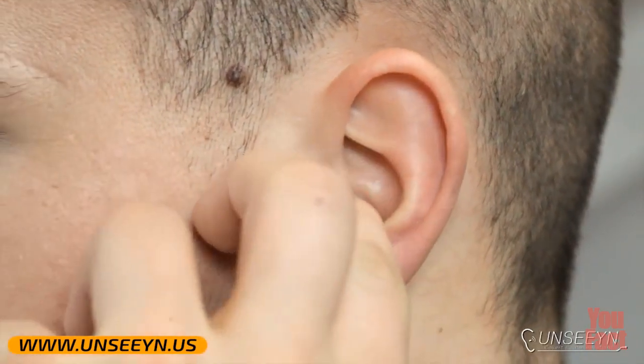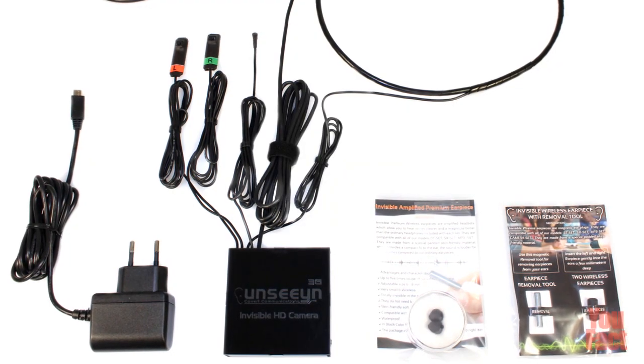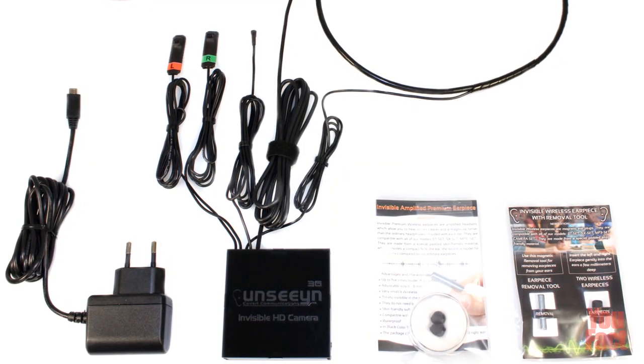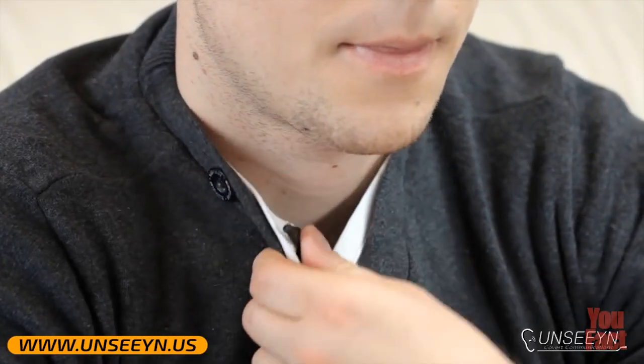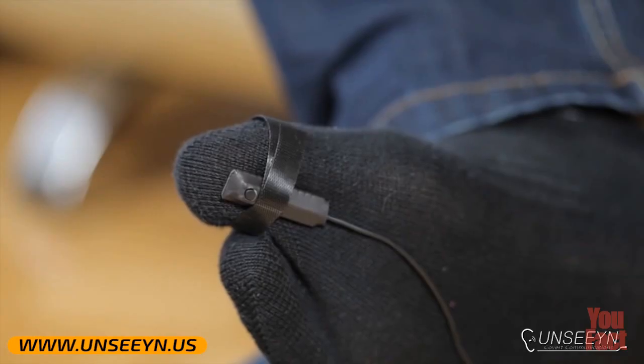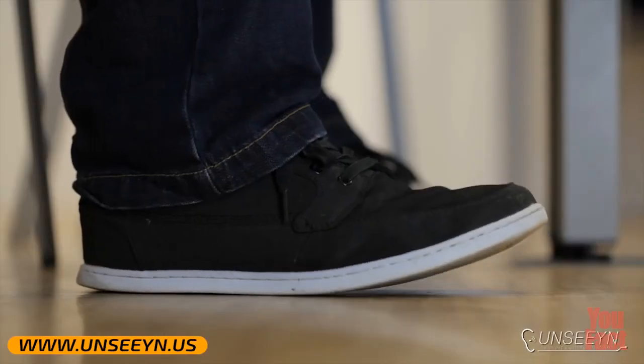He sends you the answers via the earpiece. This scheme will be the most productive and the least dangerous for disclosure. This set of gadgets can be highly expensive and the most complex options have a special button to fix it on a toe to send signals to your assistant.